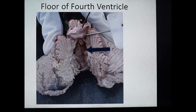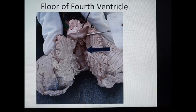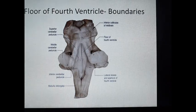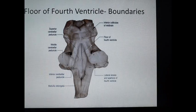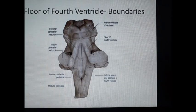Here the cerebellar hemispheres are cut along the vermis to show the cavity of the fourth ventricle along with its boundaries, floor, and superiorly the midbrain. The boundaries of the floor: superolaterally bounded by superior cerebellar peduncles, and inferolaterally bounded by inferior cerebellar peduncles on either side.